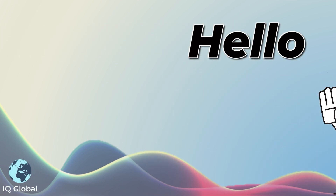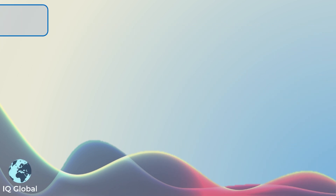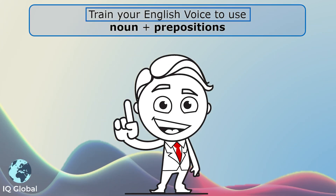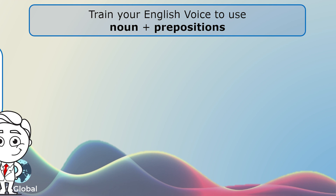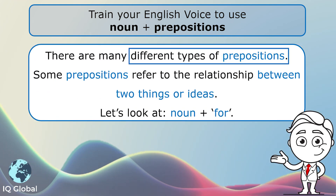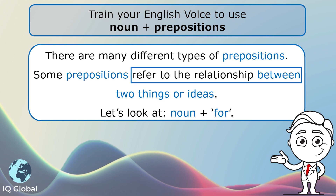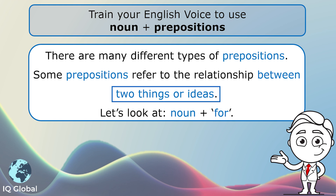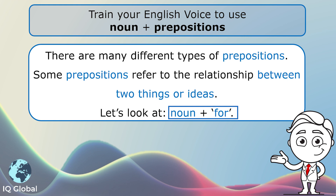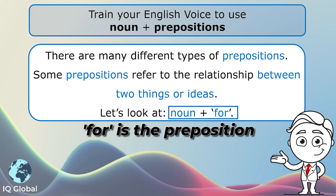Hello, today we are going to train your English voice to use noun plus prepositions. There are many different types of prepositions. Some prepositions refer to the relationship between two things or ideas. Let's look at noun plus 'for'.